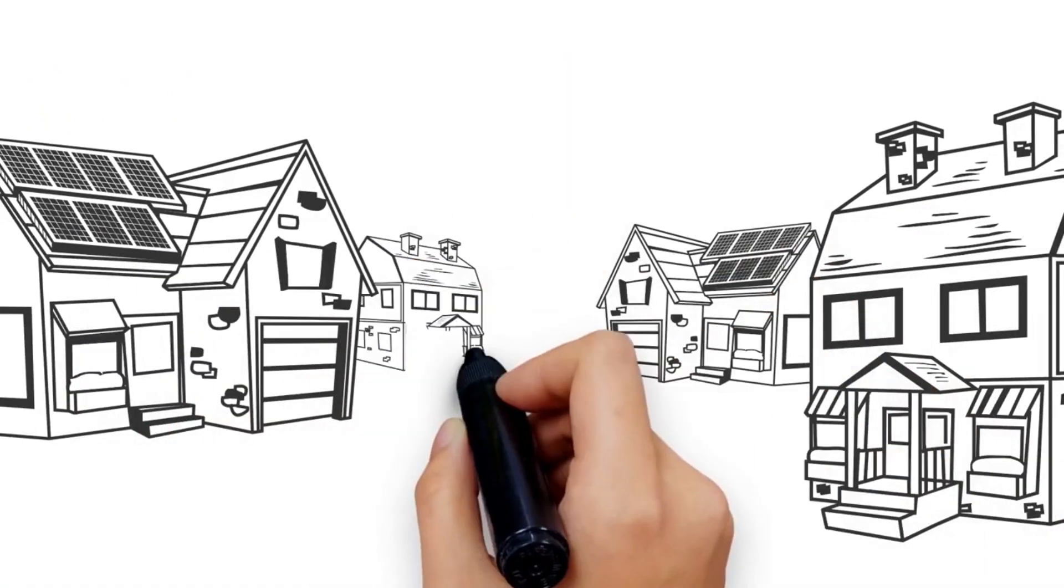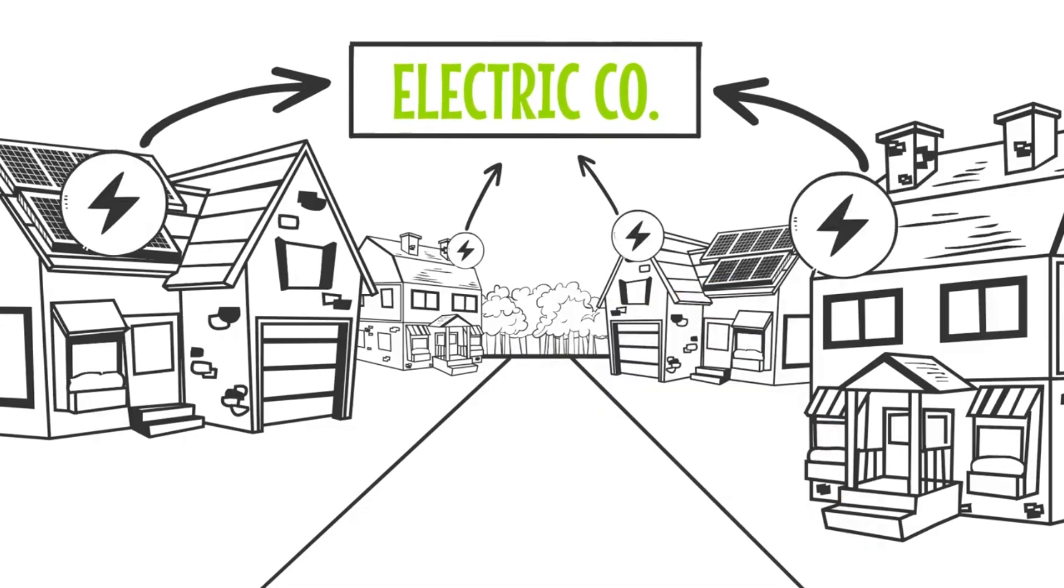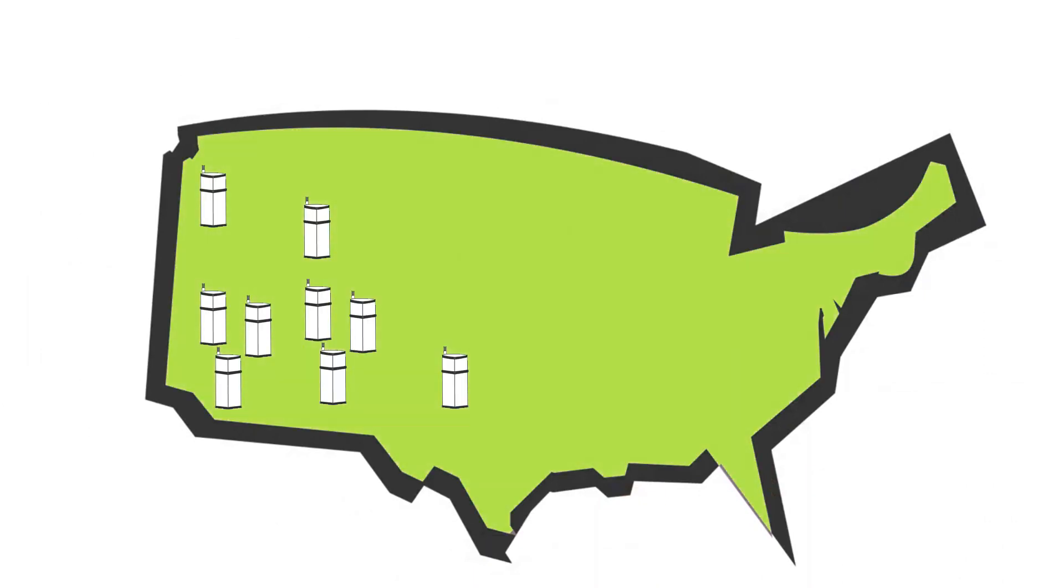Now, imagine what would happen if every house on your street was selling their electricity back to the power company. Because regulation will soon allow E1 owners to operate as a mini utility, selling power back to the grid.